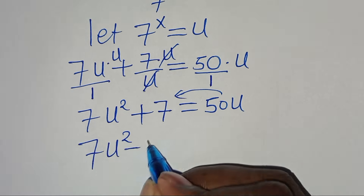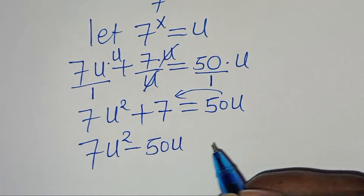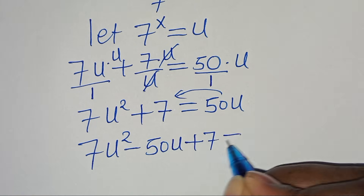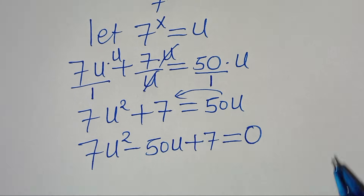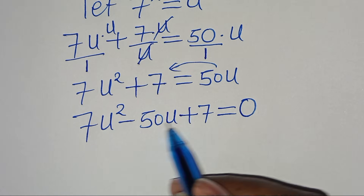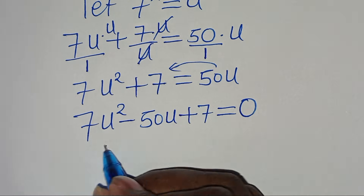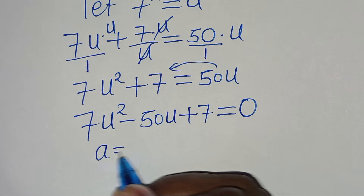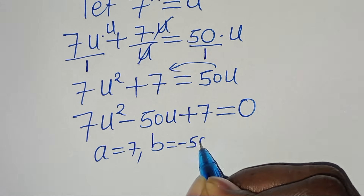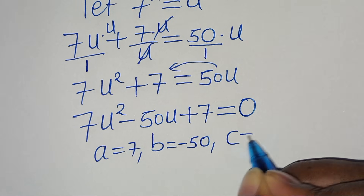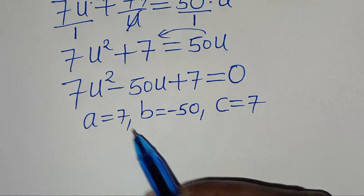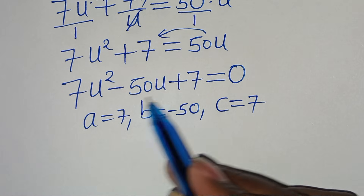Let's take 50u to the left-hand side so that we have 7u squared minus 50u plus 7 equals 0. This is a quadratic equation where a is equal to 7, b is equal to minus 50, and c is equal to 7.